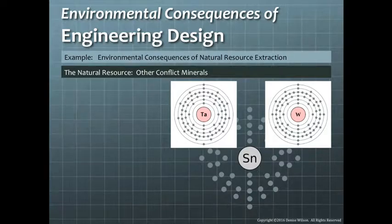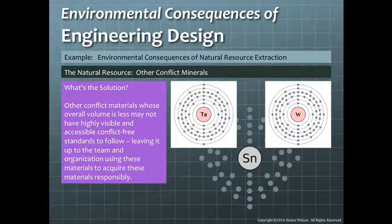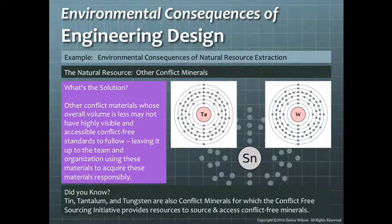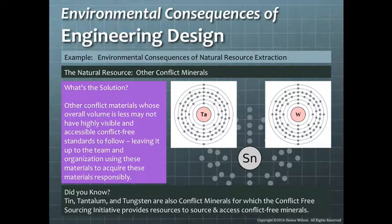Gold is not the only mineral whose mining and extraction produces problems for both people and environment. Other conflict minerals include tantalum, tin, and tungsten, all used in high technology and other products, though not in as high demand as gold. Although not as many resources are available to check the source of these conflict minerals, resources and information are nevertheless out there, and the engineer of today is well equipped to source these minerals in such a way that harm to those involved in the extraction is minimized.